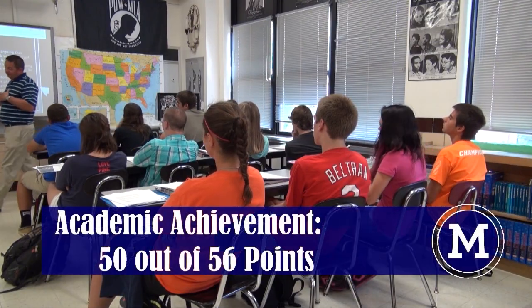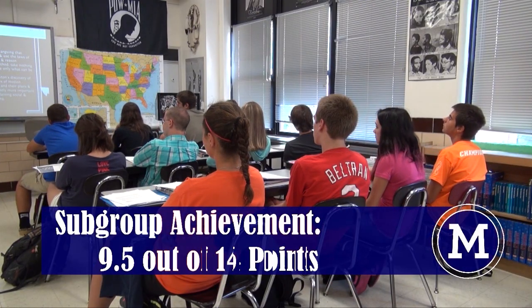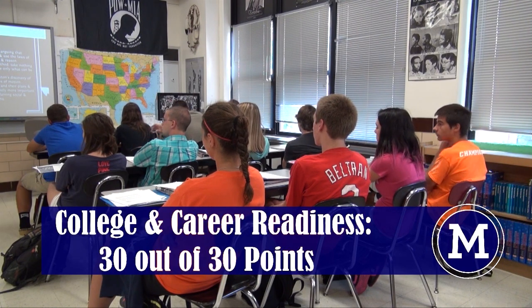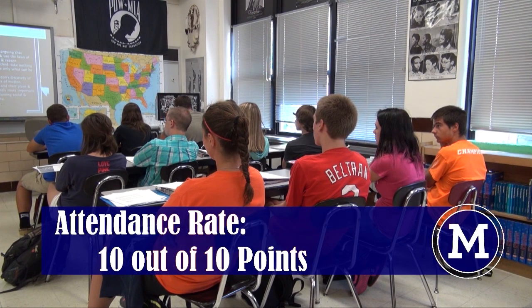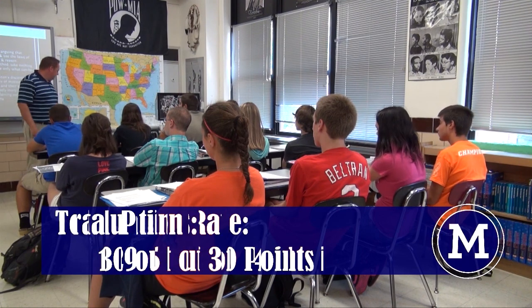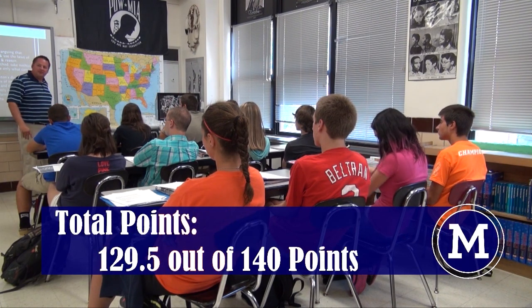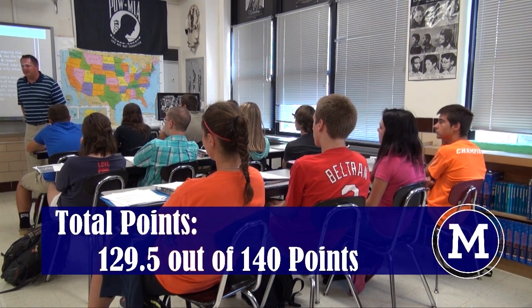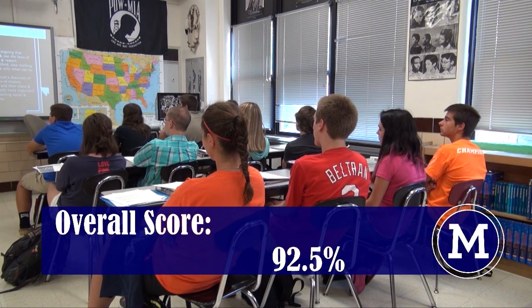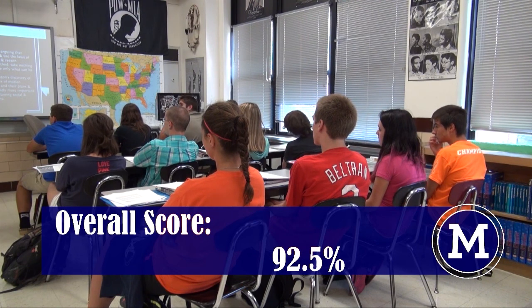When taking into account our academic achievement, we earned 50 out of 56 points; subgroup achievement, 9.5 out of 14 points; College and Career Readiness, 30 out of 30 points; attendance rate, 10 out of 10 points; and graduation rates, 30 out of 30 points. That gave us a total of 129.5 out of 140 possible points, which gave us an overall score of 92.5% of the points possible.